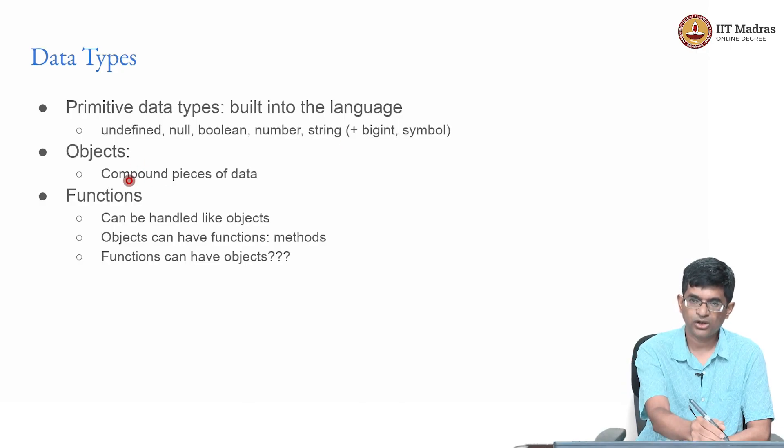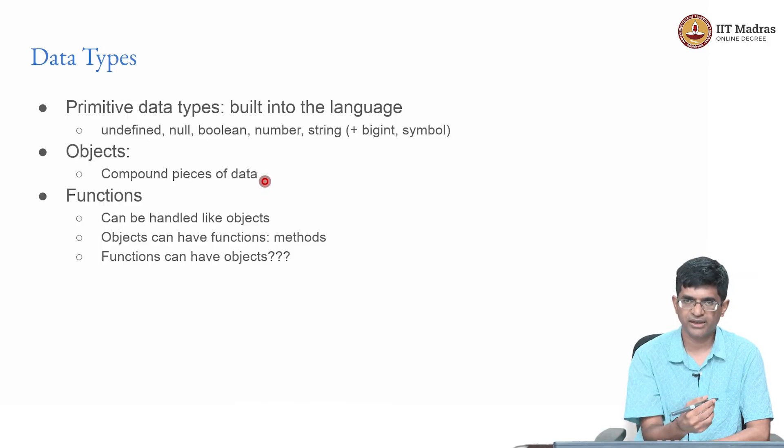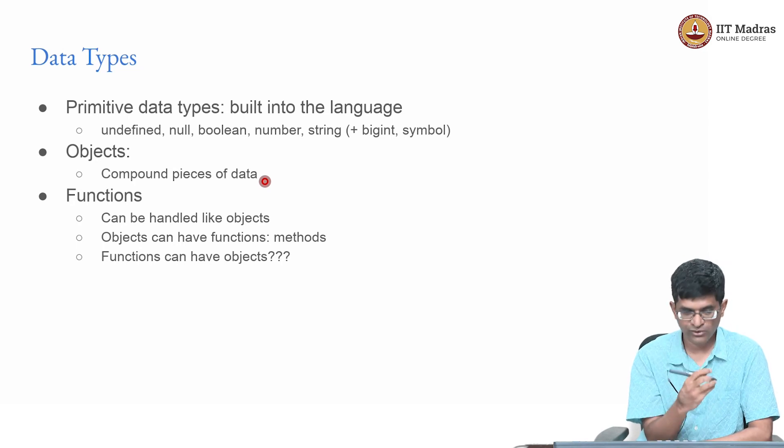There are something called objects and this is something that we will need to spend some time on later, we will be looking at in a little bit more detail because it is the basis of how classes and so on are implemented in JavaScript. But for now one way to look at it is just that an object is a compound piece of data. It has multiple things put together inside it.